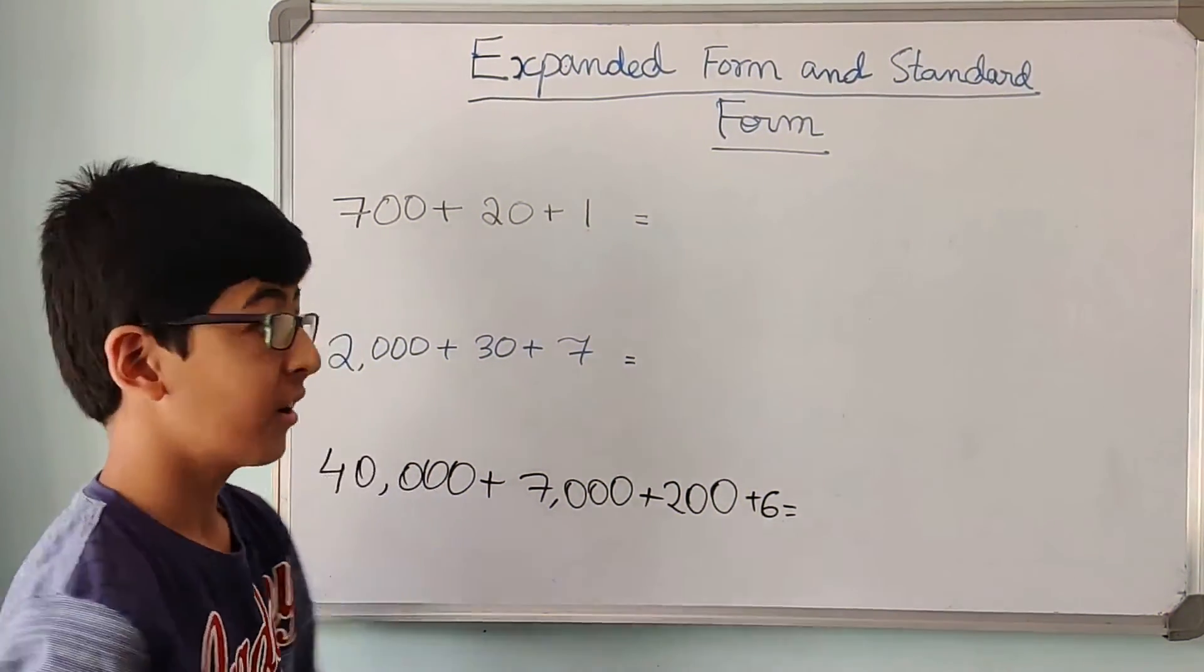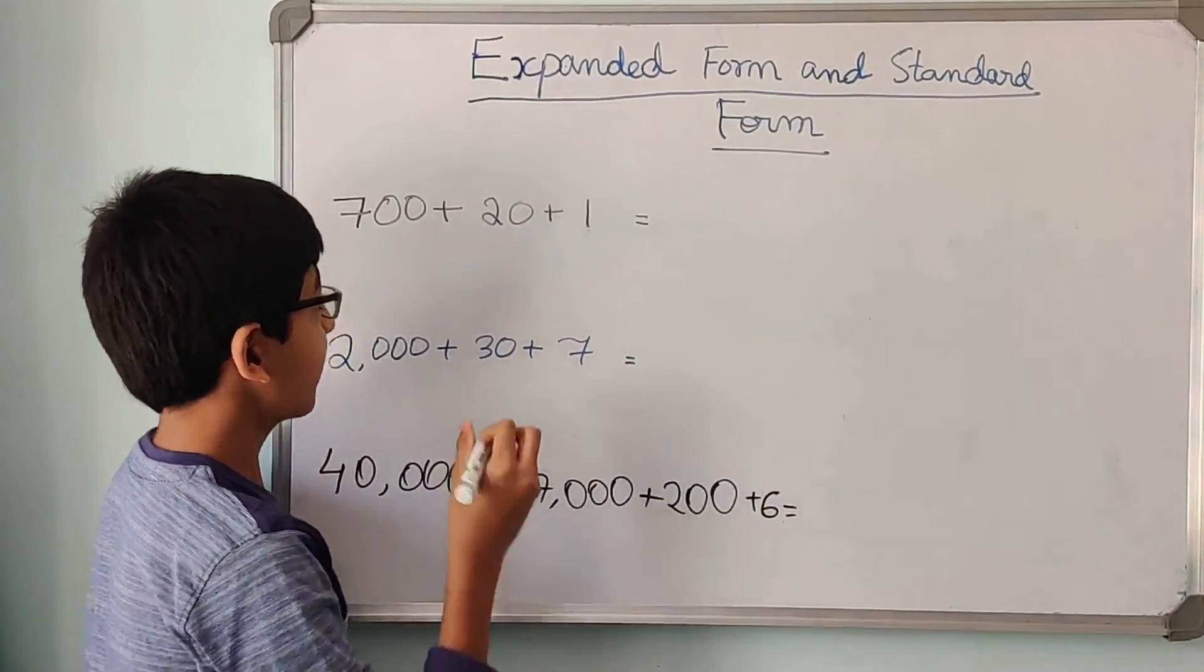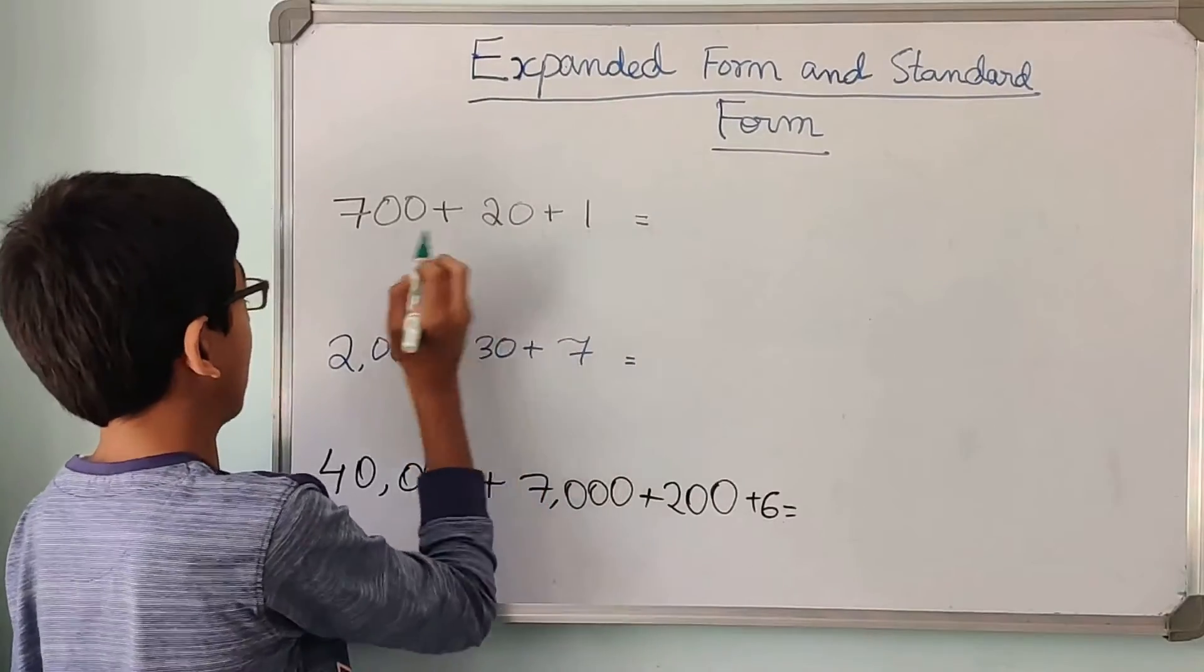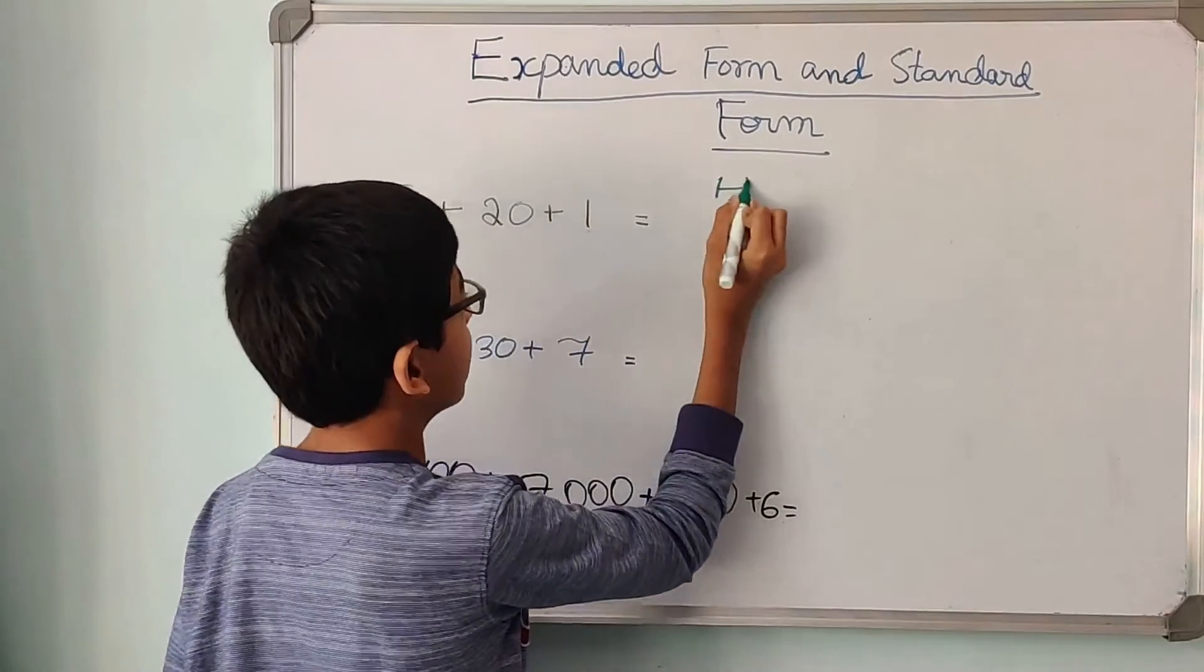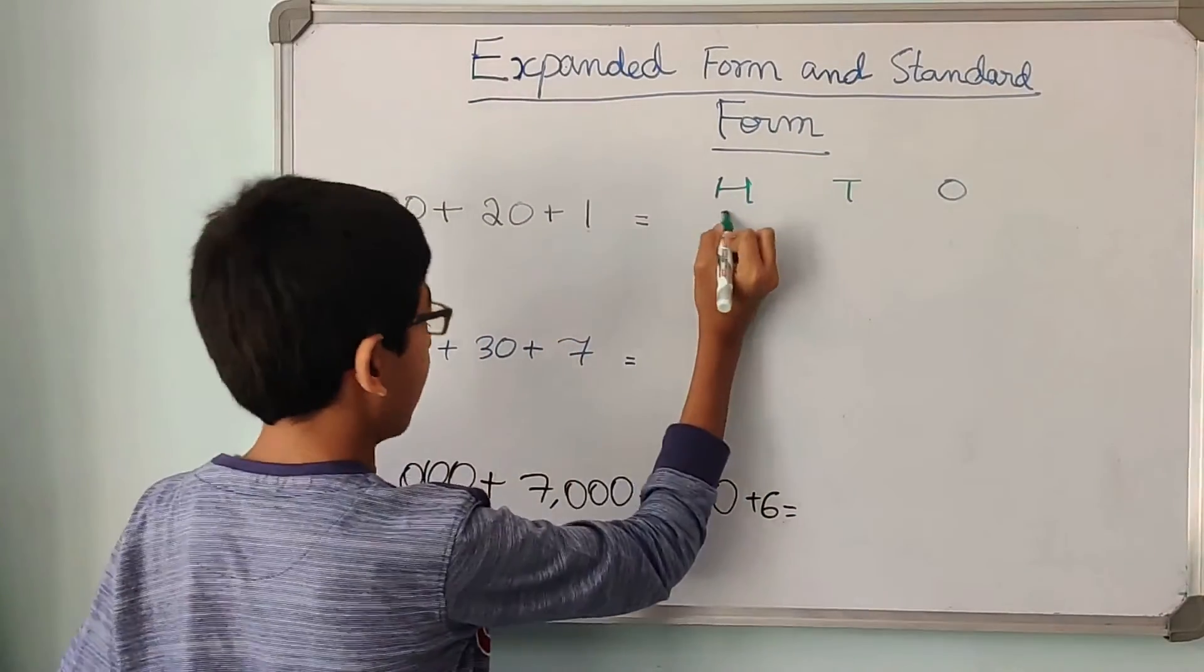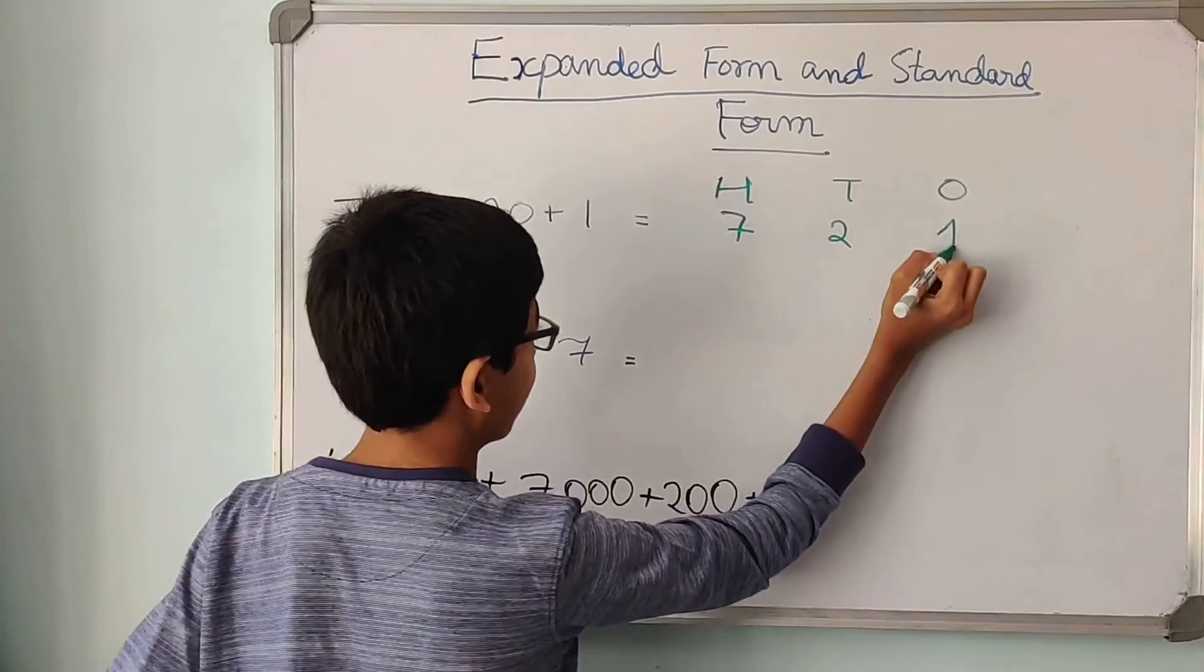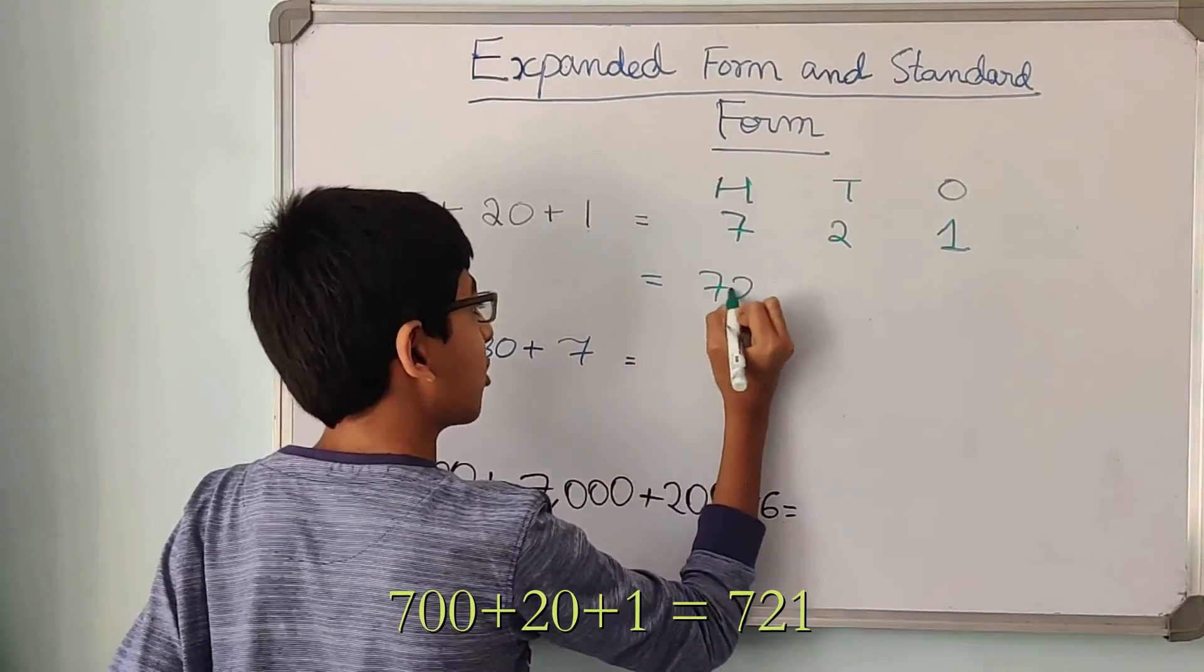Now let us try a few examples of finding the standard form. So let's write the first expanded form. 700 plus 20 plus 1. So the biggest place is hundreds. So let us write hundreds, tens, and ones. Now 7 comes in the hundreds place, 2 comes in the tens place, and 1 comes in the ones place. So this number is 721.